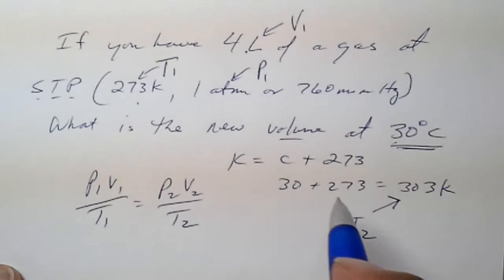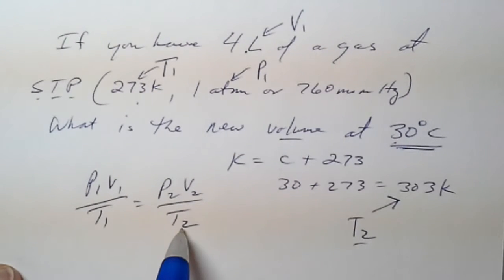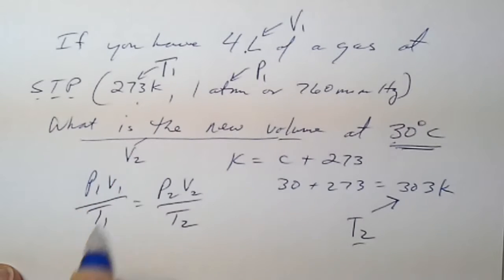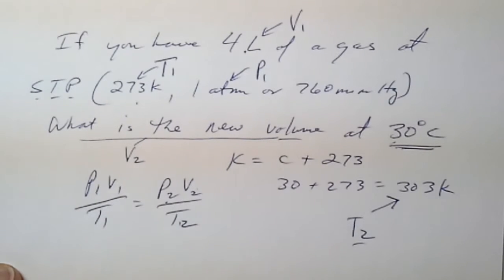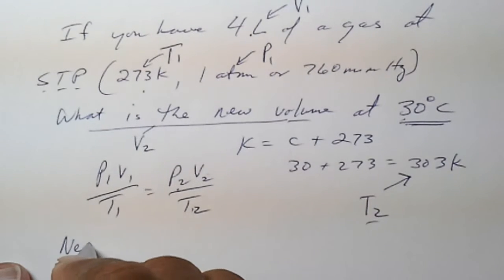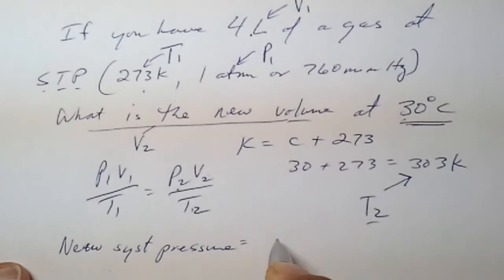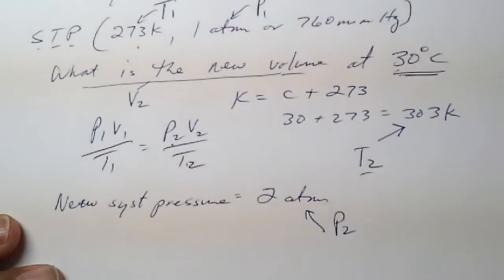We have T2, we have V2 is what we want. What is the new value? That's V2. We need a pressure. So let's say our pressure, the new system pressure is two atmospheres. That would be P2.